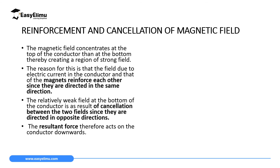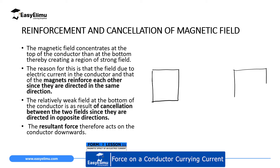The reason the conductor experiences a downward force is because of the reinforcement of the magnetic field above the wire and the cancellation of the magnetic field below the wire. Let me redraw a cross-section of the magnets we had earlier, with the conductor in between them.